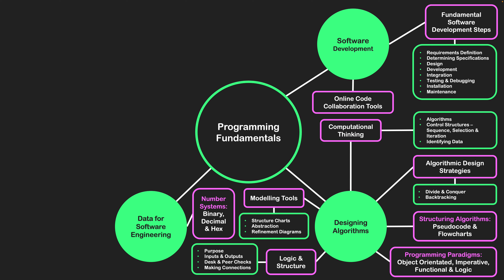That includes binary, which is base 2; decimal, which is base 10; or hexadecimal, which is base 16 — all used in different contexts within a system. The next theory is actually representing integers, especially in units of 2. There's a focus on how they appear within a system that we need to understand in this stage of the unit.